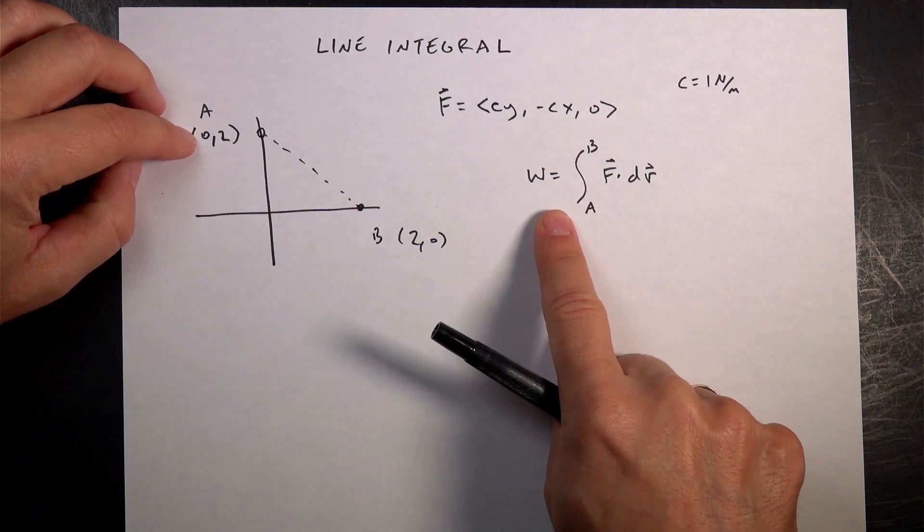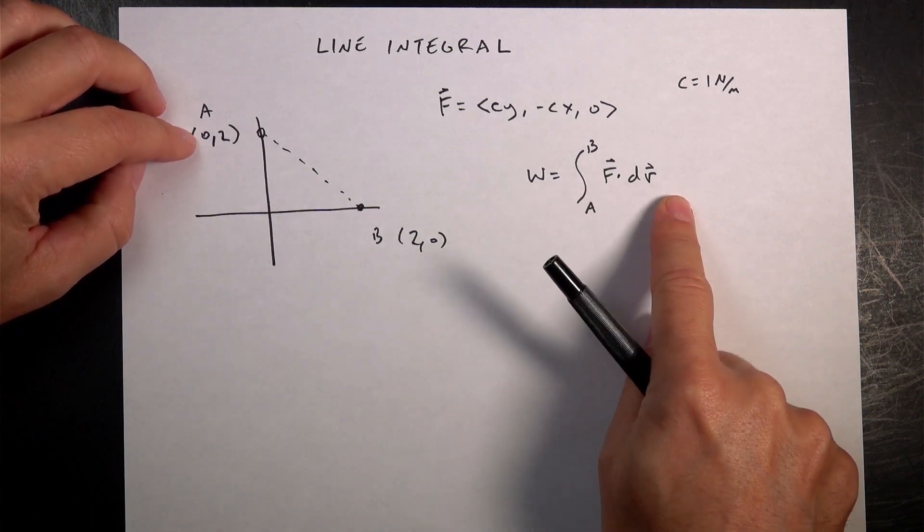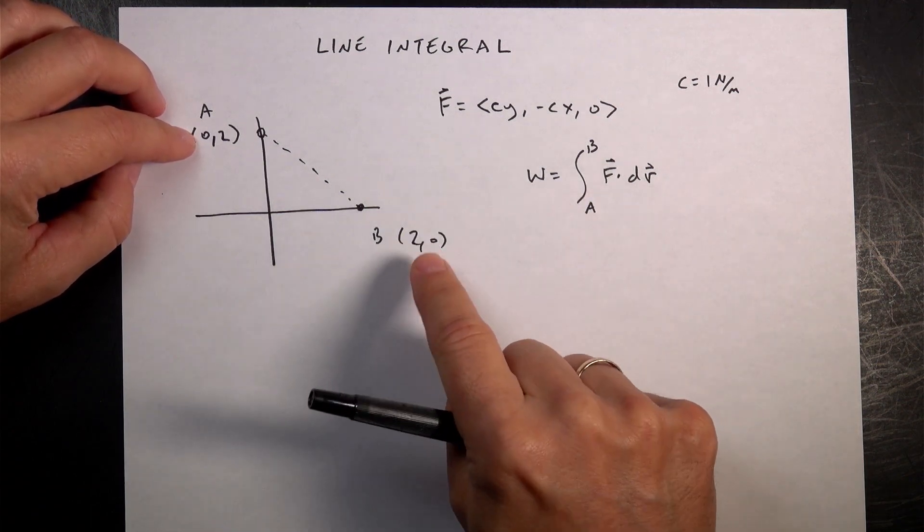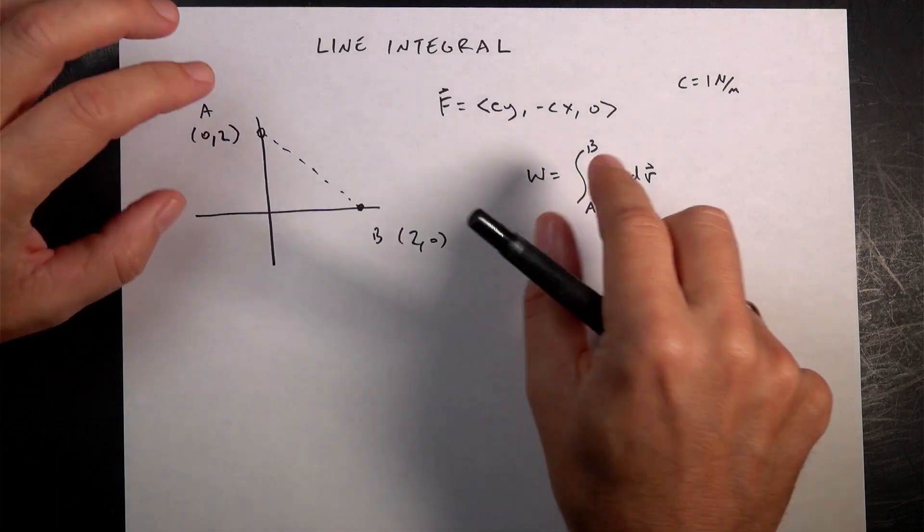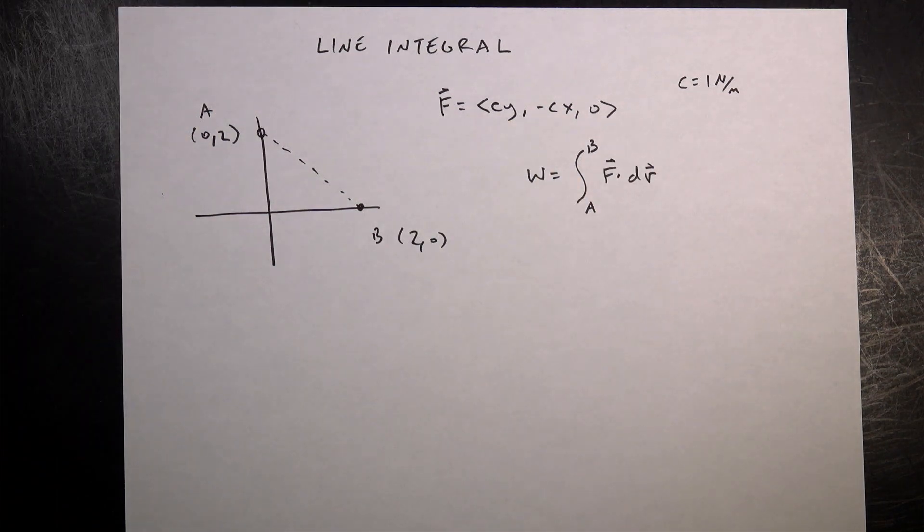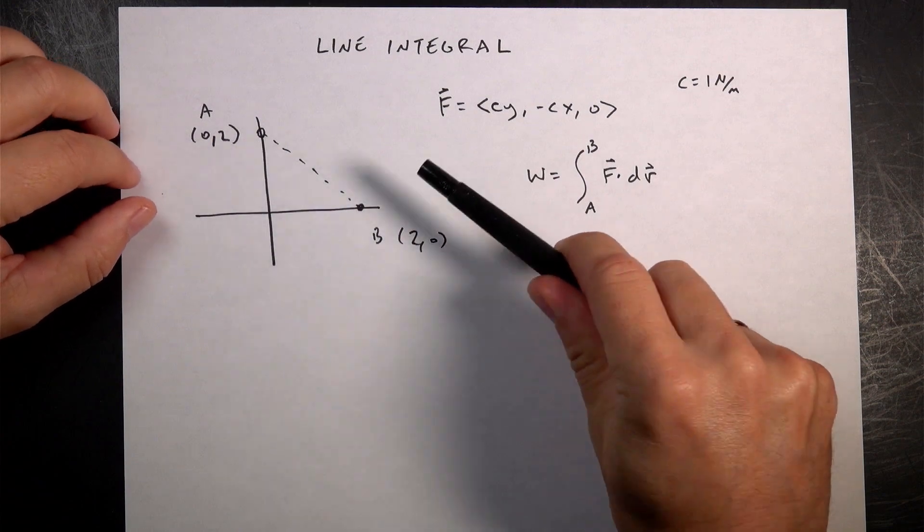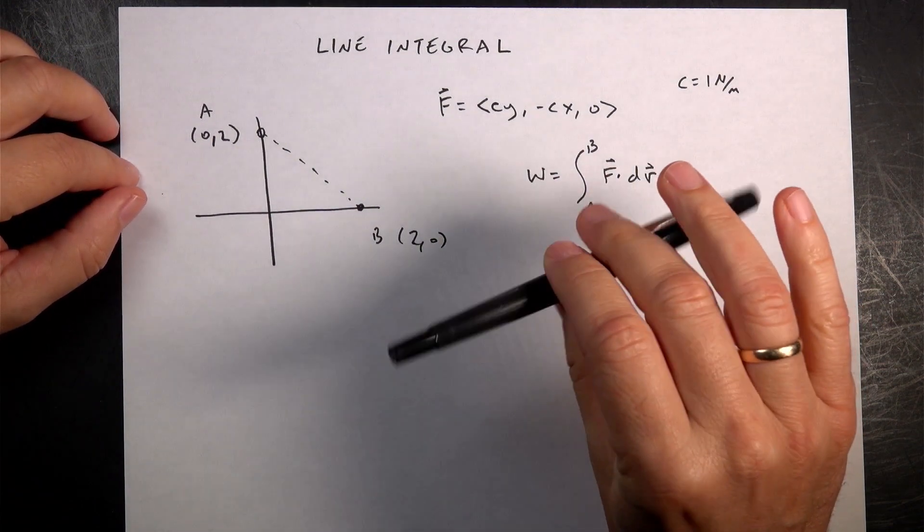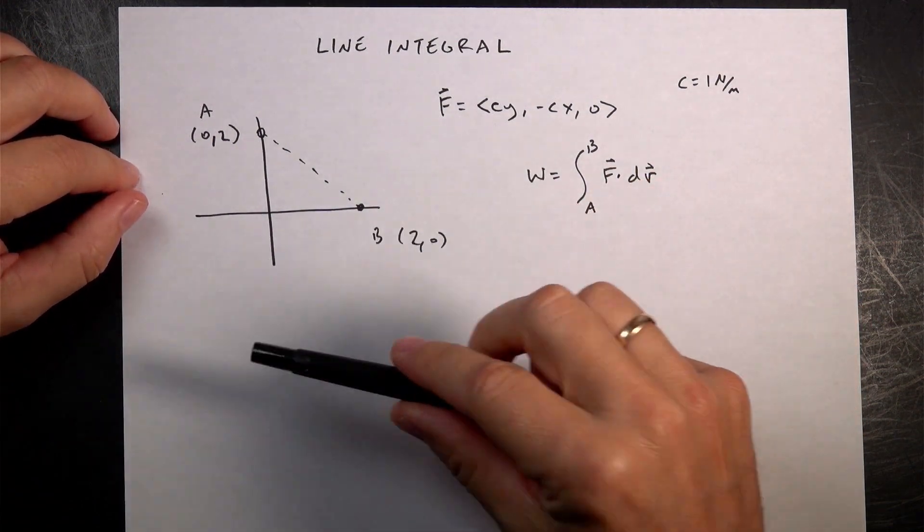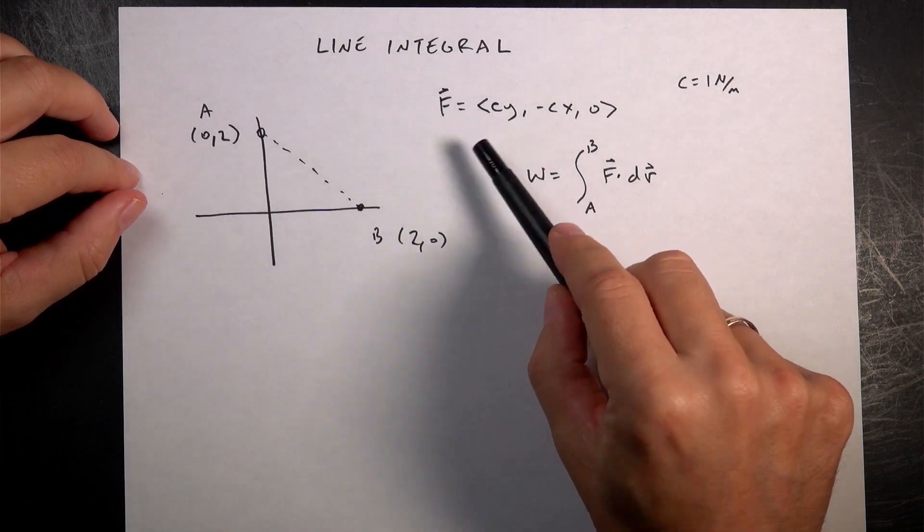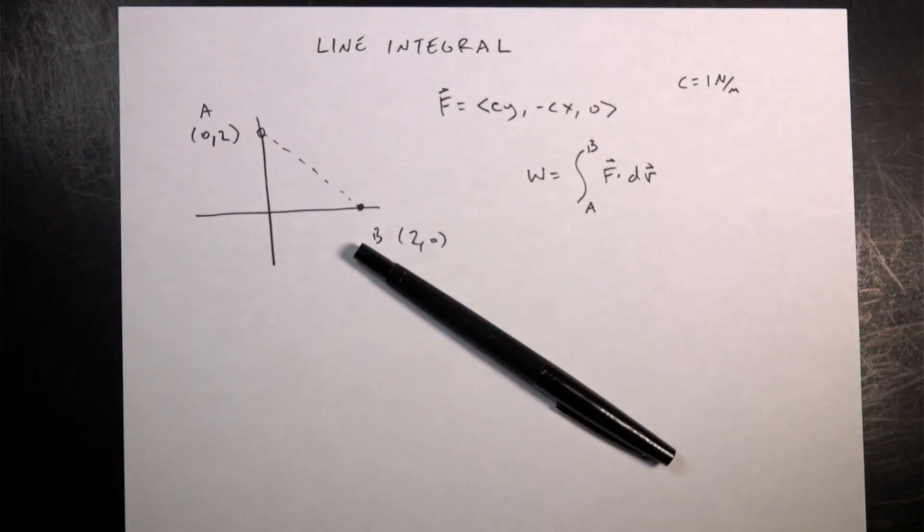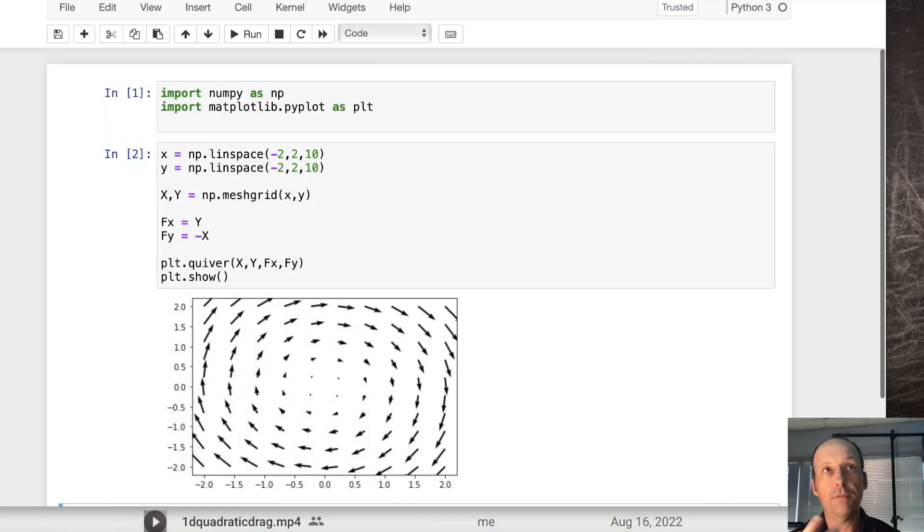We have work as the integral from A to B of F dot dR. We're going to do that, but I want to go ahead and show you what this function looks like. It's a good idea to map this, and since I just did a video on quiver plots in Python, I made a quiver plot of this vector field so we can see what it looks like. Let's switch over there.